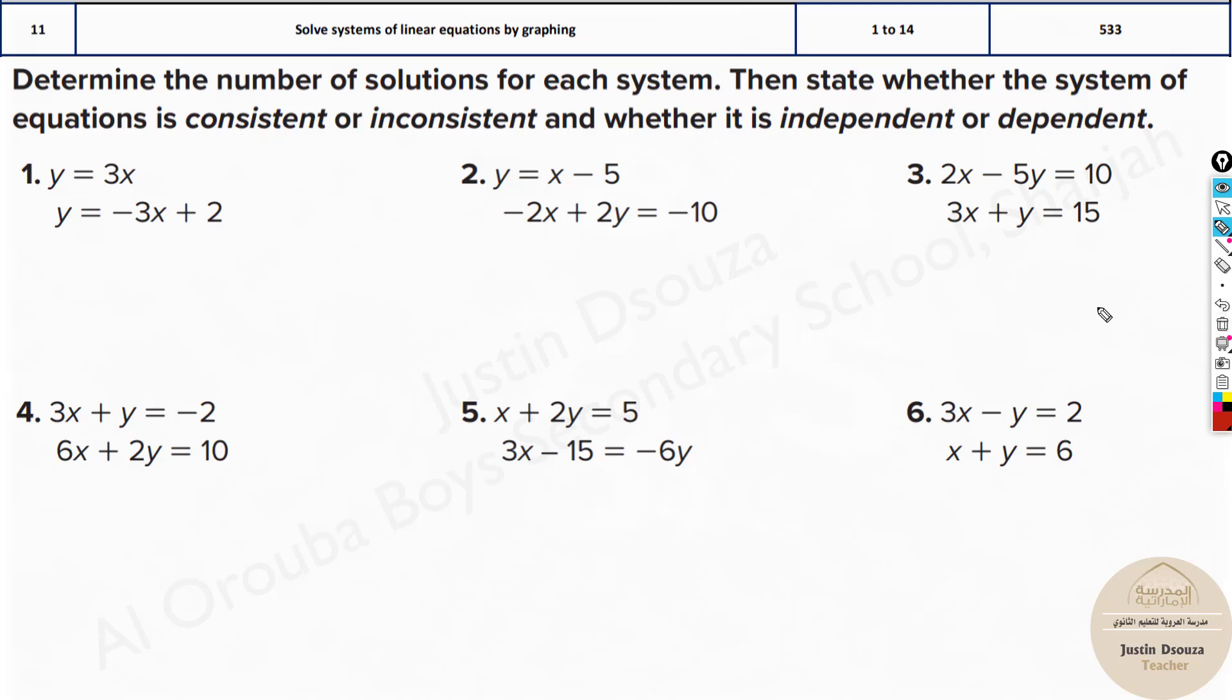Now, how do we understand which is what? We can directly do it in the calculator and verify. But first important thing is we should know the standard form. That is Ax plus By equals C. So we need to write everything in this standard form.